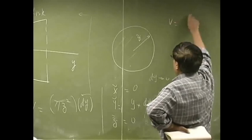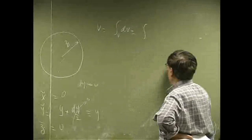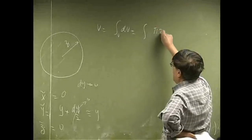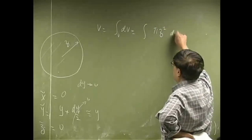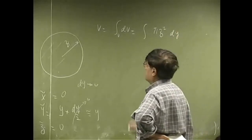So, total volume is the volume integral dv, and that's going to be pi z squared dy. And, we're looking at the limit.